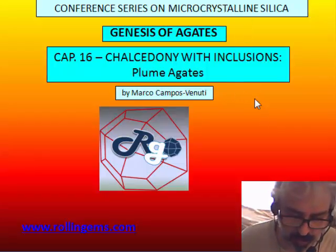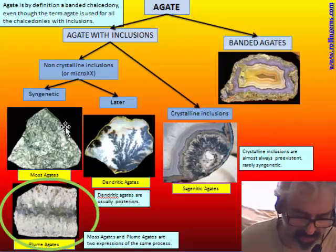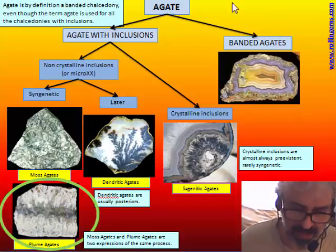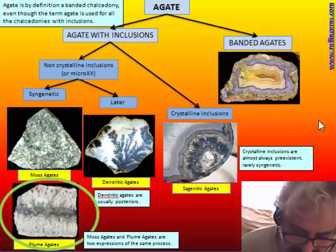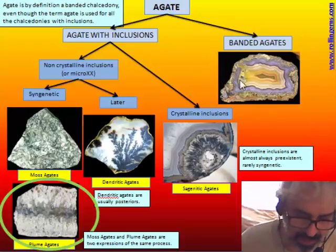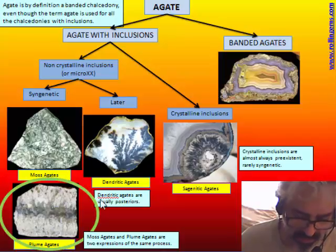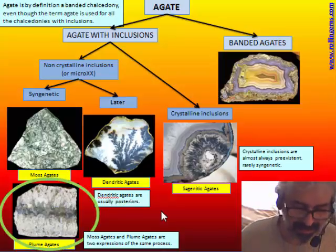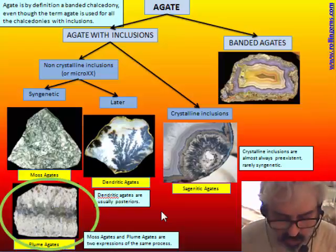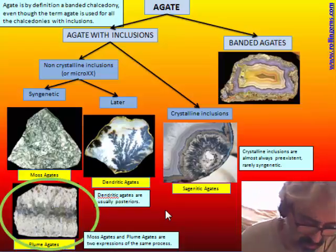We will talk here about plume agate. As we've seen in our classification, agates are divided into banded agates — the real agates — and agates with inclusions, which are agates with moss, plume, dendritic, or sargenitic. This whole group are not real agates because they are not banded, but are a kind of chalcedony that we usually call agate because it's a more appealing word.